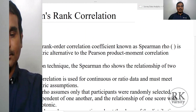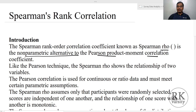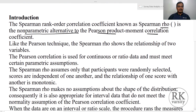The Spearman rank correlation, which is indicated as rho, is a non-parametric alternative of a Pearson product-moment correlation. If your data is normally distributed, then we use Pearson correlation, that is a simple linear correlation. Whereas if the data is not normally distributed, then we use Spearman's rank correlation.